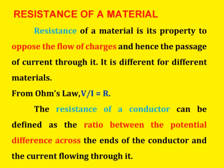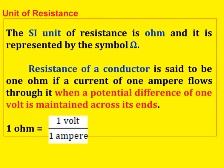Next, resistance of a material. Resistance opposes the flow of charges and is different for different materials. From Ohm's law, V / I = R. The resistance of a conductor is defined as the ratio between the potential difference across the ends of the conductor and the current flowing through it. The unit of resistance is Ohm. The resistance is said to be 1 Ohm if a current of 1 ampere flows when a potential difference of 1 volt is maintained across its ends. So, 1 Ohm = 1 volt / 1 ampere. This could be asked in objective type questions.